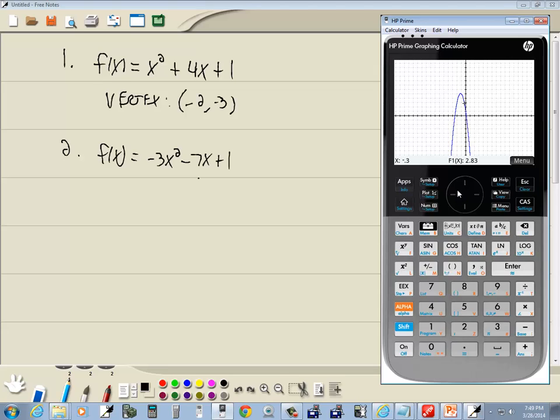Again, our extremum is our vertex. In this case, we have a max up here, and that'll be our vertex. So we'll do our menu, click function, and then I want to choose extremum. So I do 4, and it comes back and tells us this.